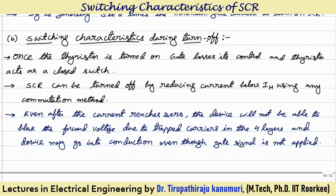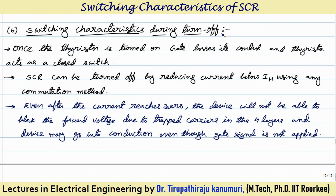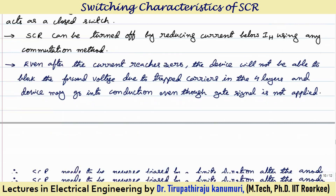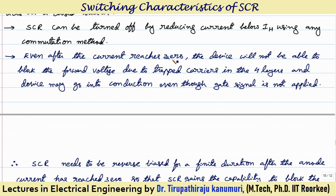Now going to the switching characteristics during turn-off condition. Once the thyristor is turned on, the gate loses its control and the thyristor acts as a closed switch. SCR can be turned off by reducing the current below the holding current, using commutation methods. Even after the current reaches zero, the device will not be able to block the forward voltage due to trapped carriers in the four layers, and the device may go into conduction even without a gate signal.